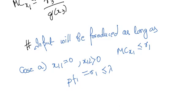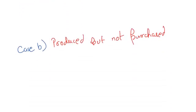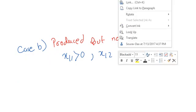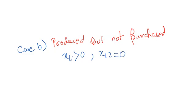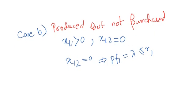The equilibrium relations yield pf1 equals r1 less than or equal to lambda. Now the second case is when it is produced but not purchased. In that case x11 is greater than zero and x12 is equal to zero, which gives us the relation pf1 equals lambda less than or equal to r1.